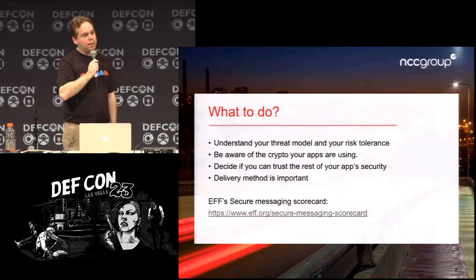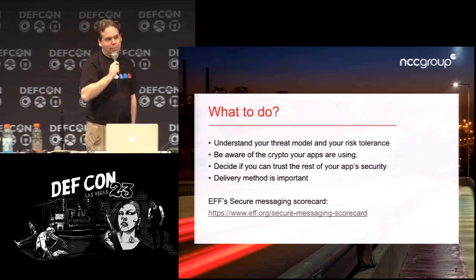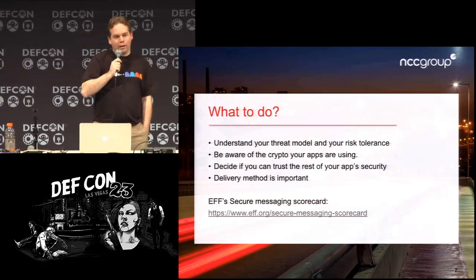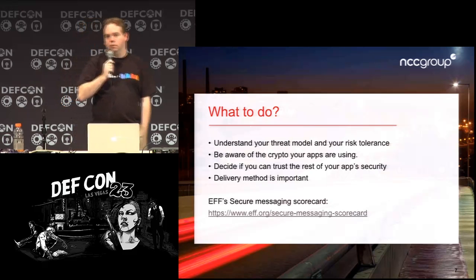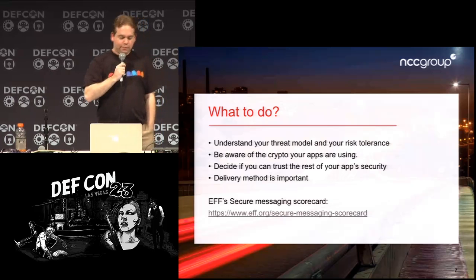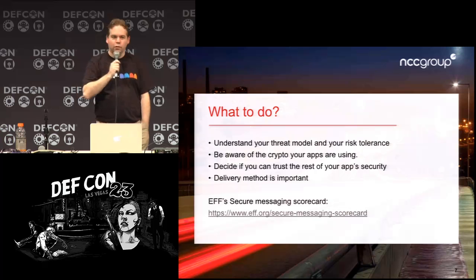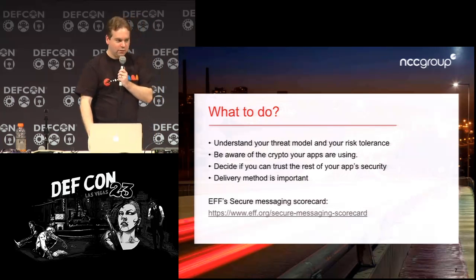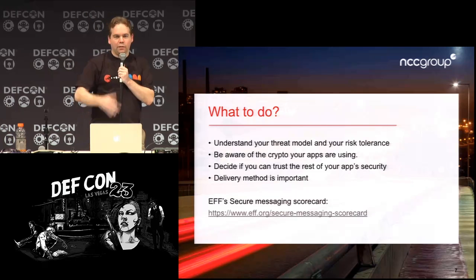So what can you do? You need to understand who you are, why you're trying to secure things, and who you're trying to secure them from. You need to understand the features of the apps you're considering, decide if the app actually does what it claims, and find a way to obtain that app securely. Key validation is probably the most important takeaway — if you can only take away one thing from this, it's key validation. If you're using an app where you can't figure out how to do key validation, assume it doesn't, and use it accordingly. The EFF scorecard is a great starting point for everyday people to learn what different apps can do.